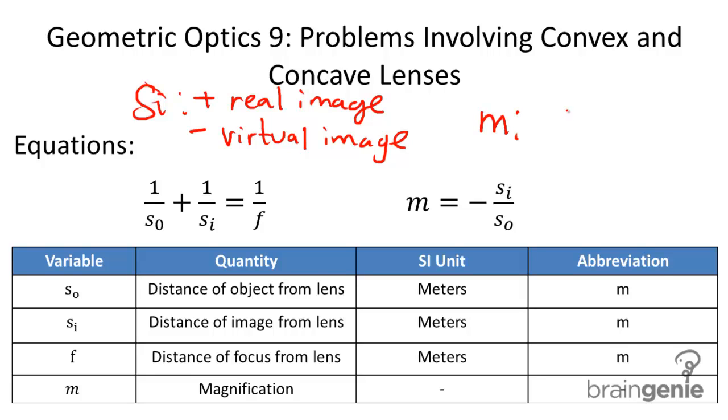A couple things to note about M. When M is positive, the image is upright. And obviously, when it's negative, the image is inverted or upside down.